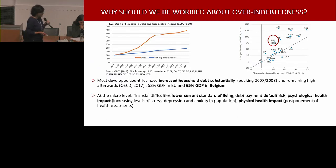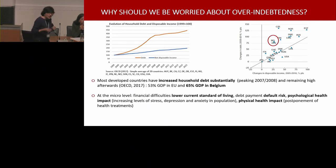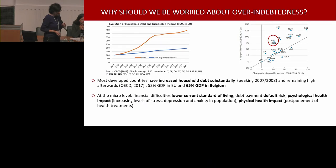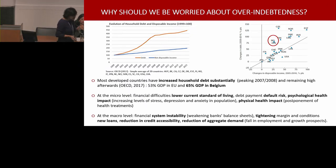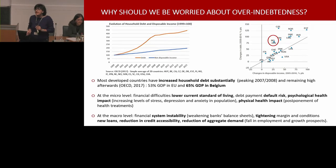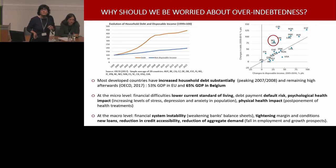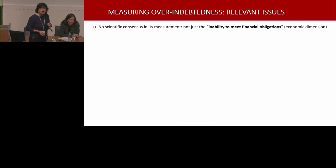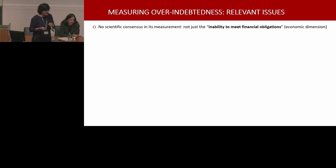At the micro level, financial difficulties lower the current standard of living. Debt payment may imply default risk, psychological health impact — as we were discussing in the first presentation — and even physical health impact. At the macro level, it's also a problem given system stability, the tightening on future new loans, the reduction of credit accessibility, and a key thing — a reduction in aggregate demand, so a fall in employment and growth prospects. It's a worrying situation, and clearly there's no scientific consensus on how to measure over-indebtedness.